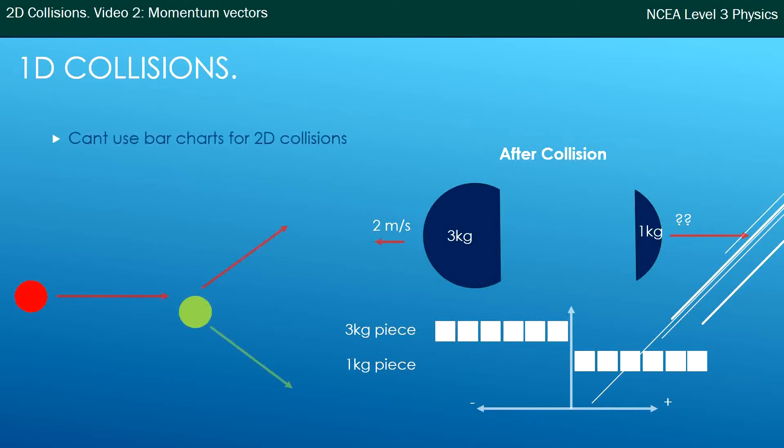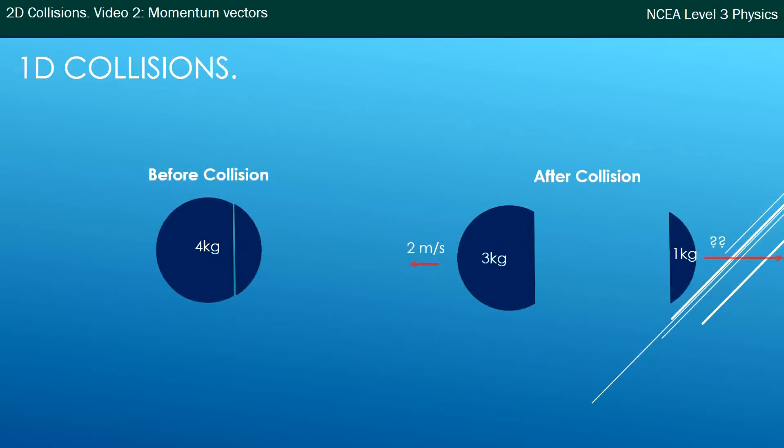The way we deal with this now that we can't use bar charts for our 2D collisions is we're going to start solving them using vectors. Vectors is a fancy word for arrows. You've used vectors before. You've used them for forces. You might have used them for velocities and accelerations. So it's the same concepts, we're just applying them to momentums. And because we're not dealing with the forces or the velocities in this case, we've got to make sure whenever we draw our arrows we label them so we know what they are.